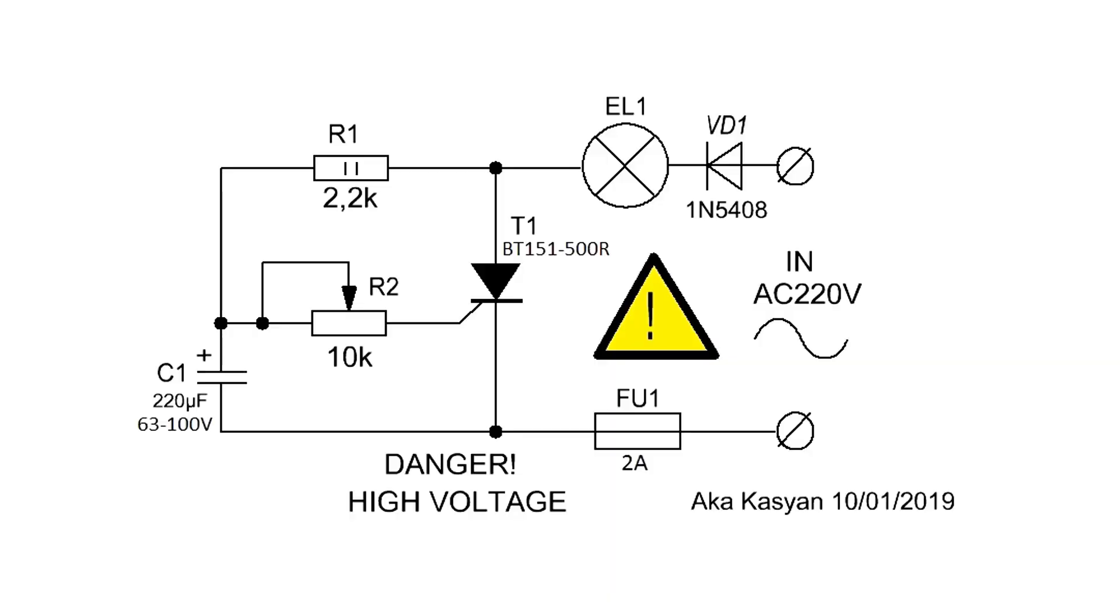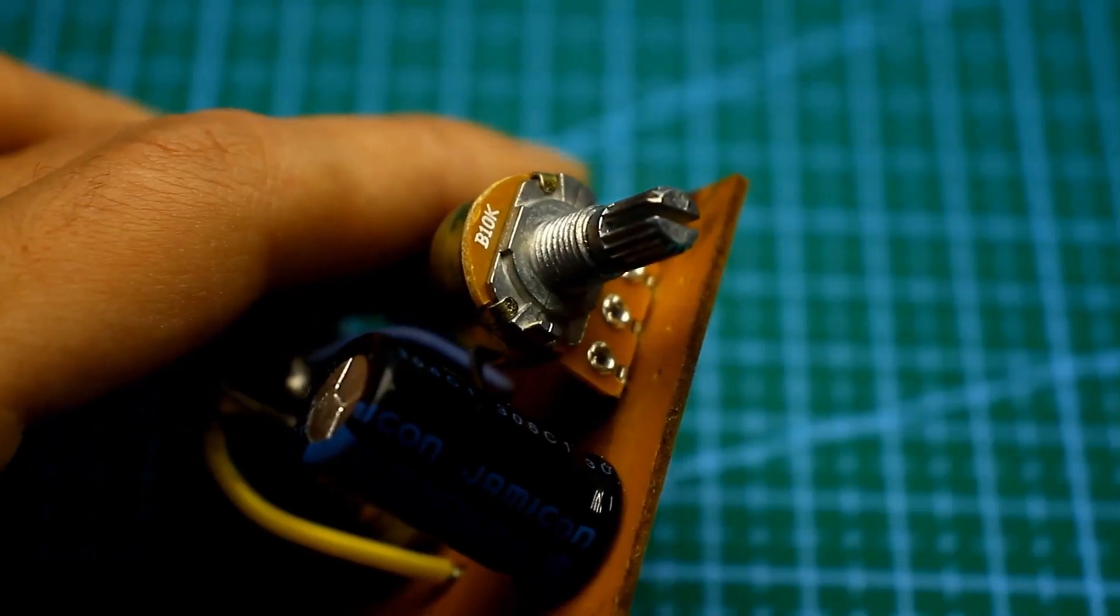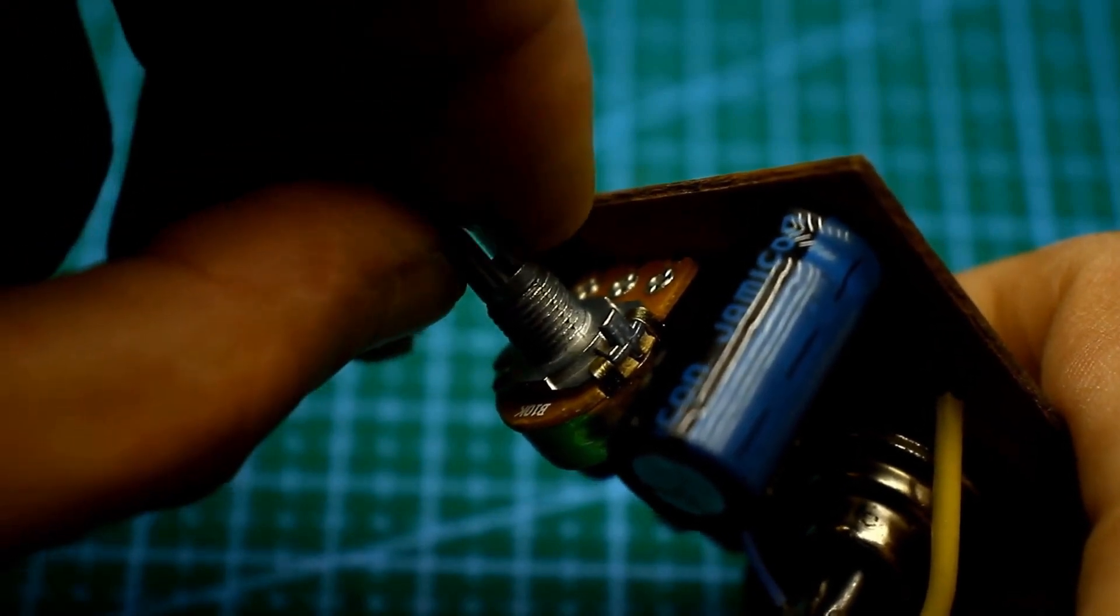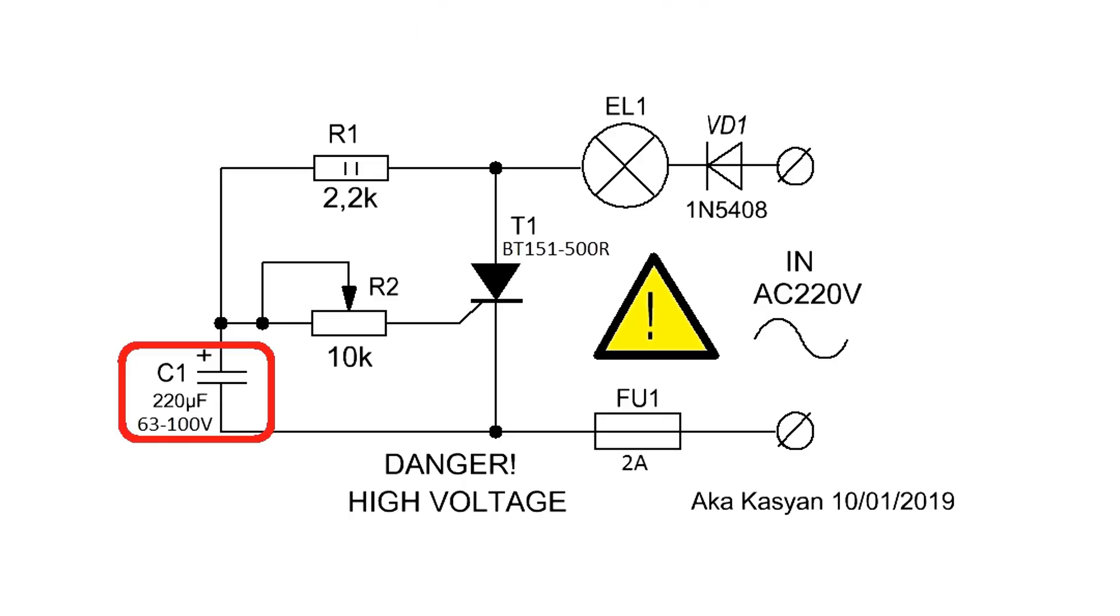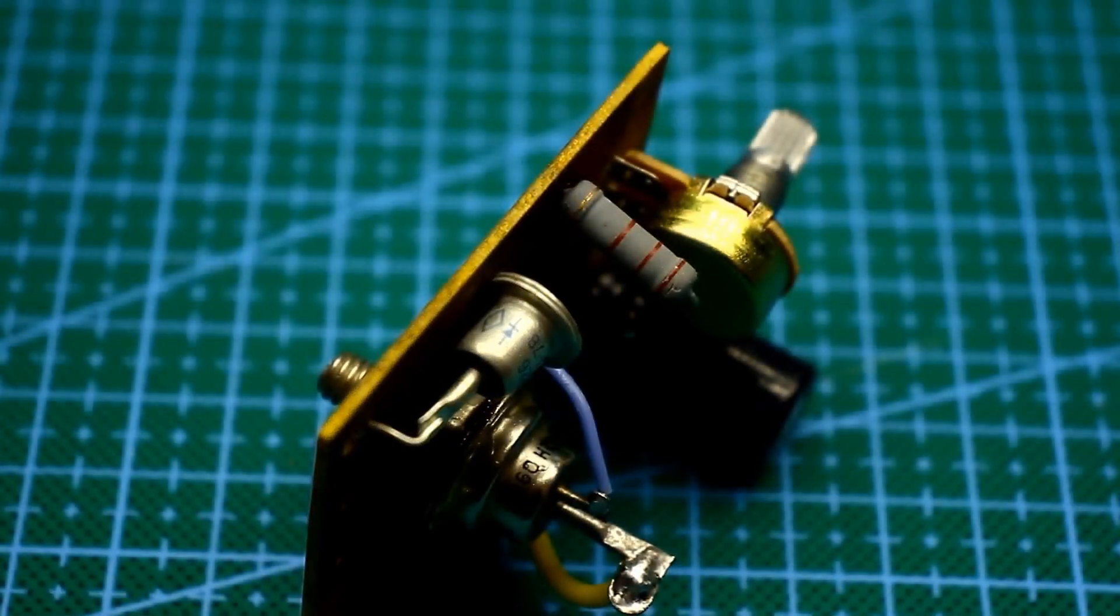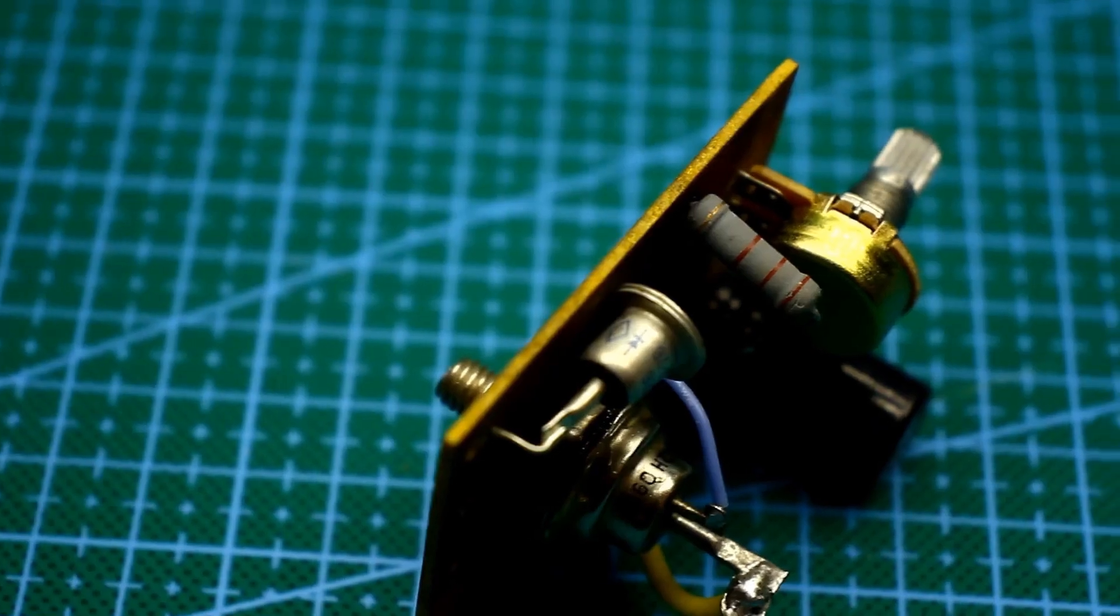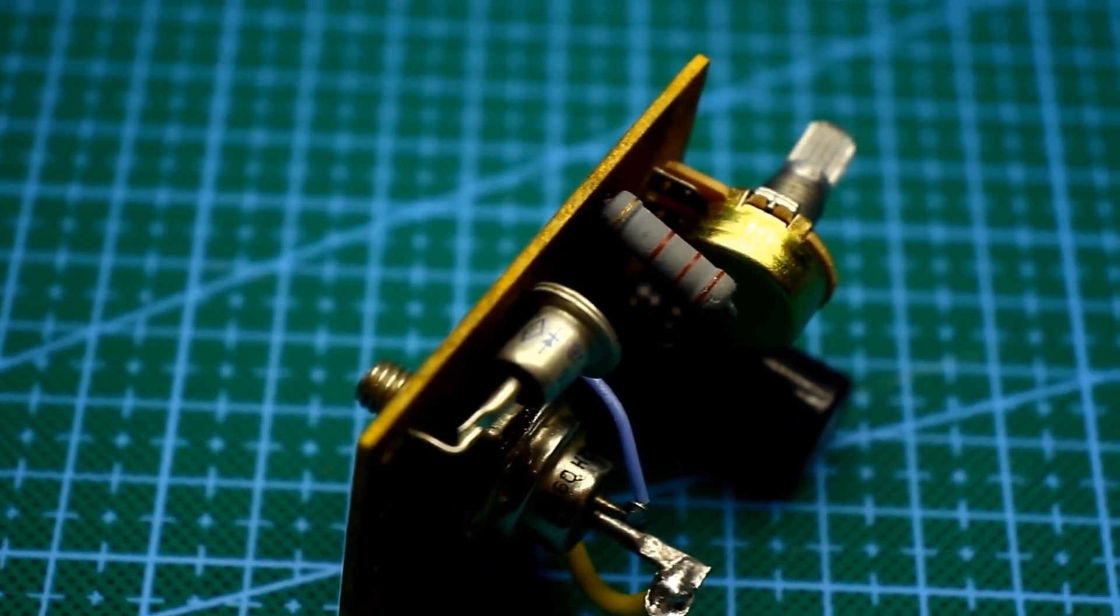By rotating the variable resistor, you can change the delay time for the thyristor to trigger, in other words, the frequency of the lamp's blinking. The frequency is also affected by the capacitance of the capacitor and the resistance of resistor R1. But I don't recommend changing it. This resistor needs to be powerful. If possible, use one rated at 3 to 5 watts. Even a 2 watt one heats up noticeably.